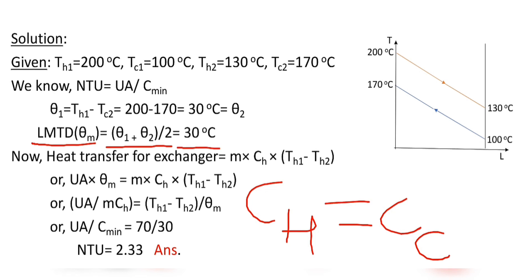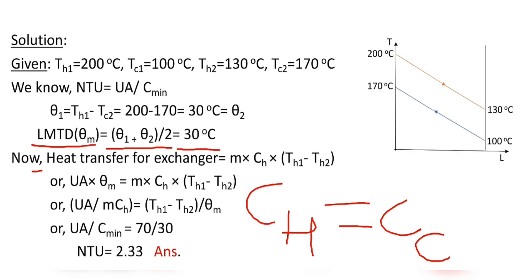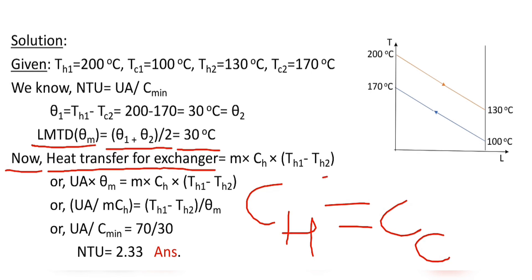Since heat transfer in a heat exchanger is an adiabatic process, the heat lost by the hot fluid is equal to the heat gained by the cold fluid. We can equate the heat transfer for the given heat exchanger to the heat lost by the hot fluid or the heat gained by the cold fluid.